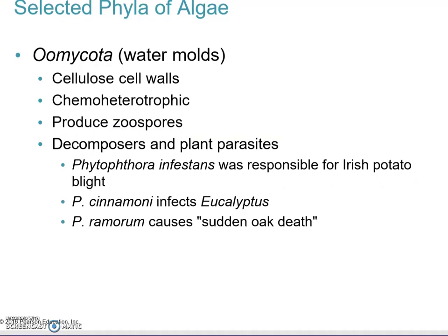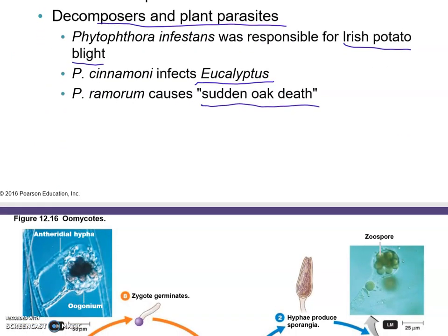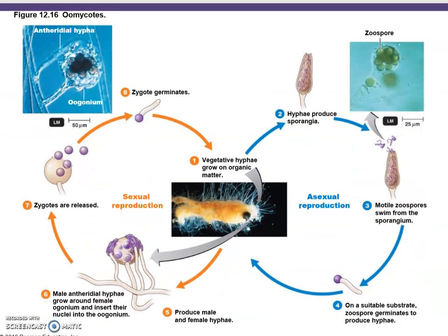The last group is the water molds, or Oomycota. They have cellulose cell walls but are chemoheterotrophic, meaning they don't photosynthesize. They produce spores and are typically decomposers and plant parasites — responsible for Irish potato blight, infection of eucalyptus trees, and sudden oak death.